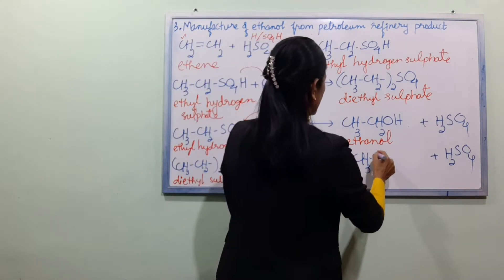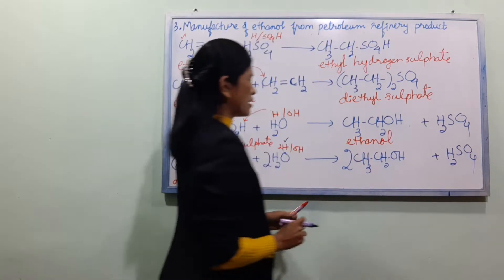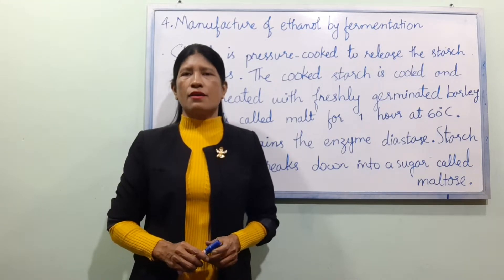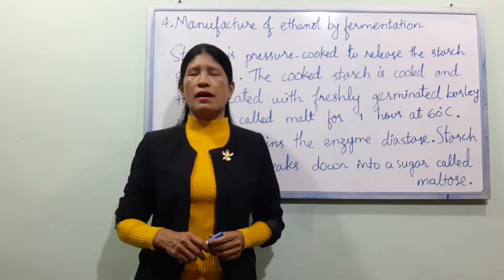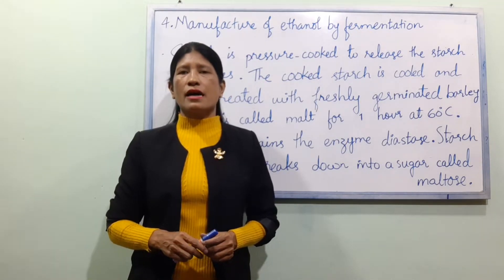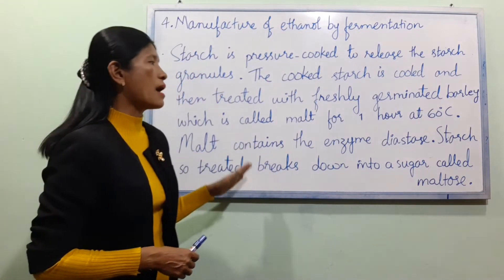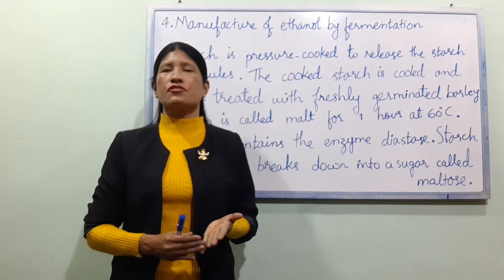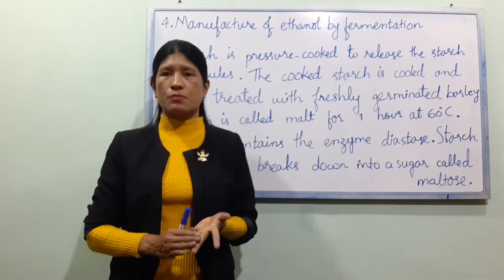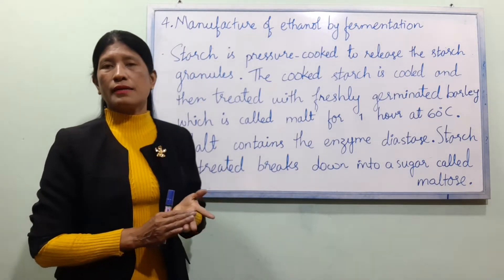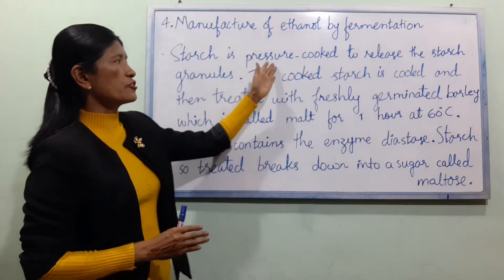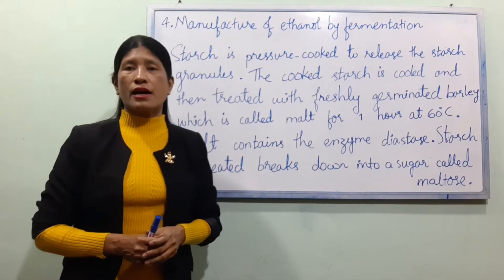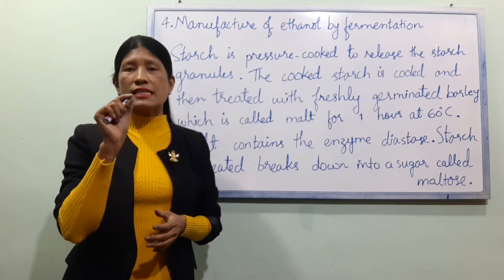Now, method number four: manufacture of ethanol by fermentation. Fermentation is a simple process. If you use starchy materials, you can use starch as your starting material.